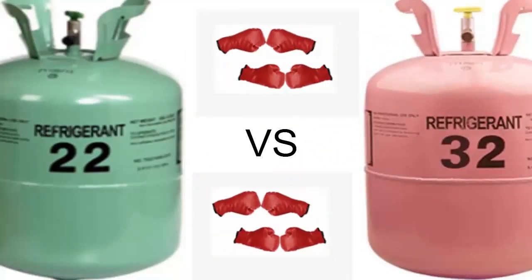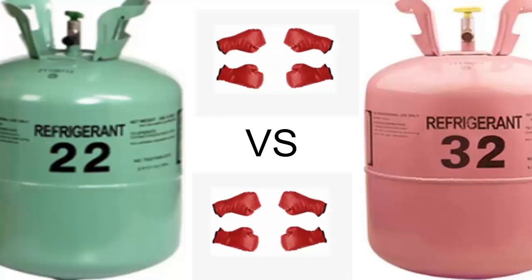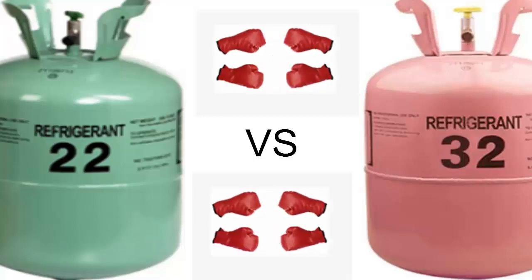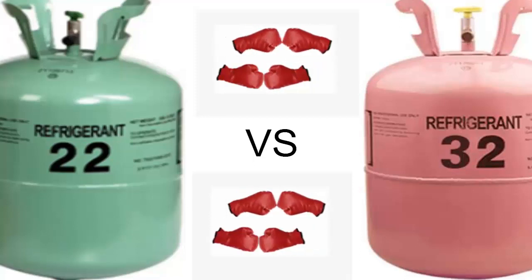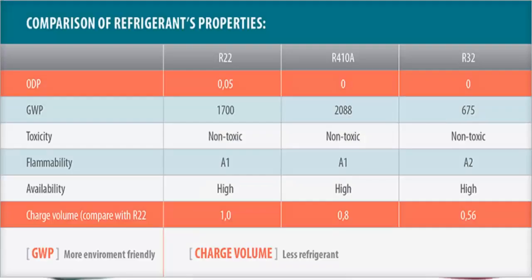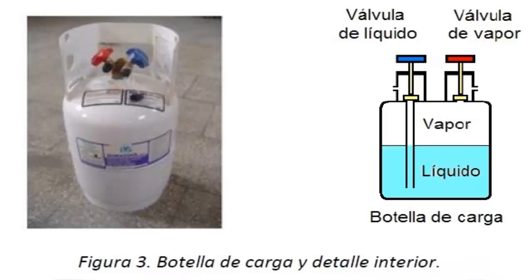Both R22 and R32 internally consist of a single element, without the intrinsic existence of a gaseous mixture. This allows both of them to be charged in both liquid and gaseous phases.